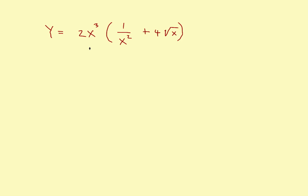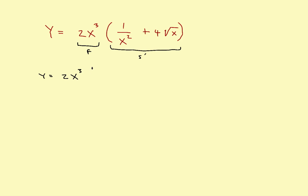Let's take a look at another example. This one looks a little different, but we'll still apply the same rule. This part right here is the first, and this entire thing right here is the second. Before you can apply the product rule, you've got to rewrite the thing. I'm going to rewrite it: 2x cubed, and then get the variable out of the denominator, so it becomes x to the negative 2 plus 4, and the square root of x becomes x to the 1/2 power.